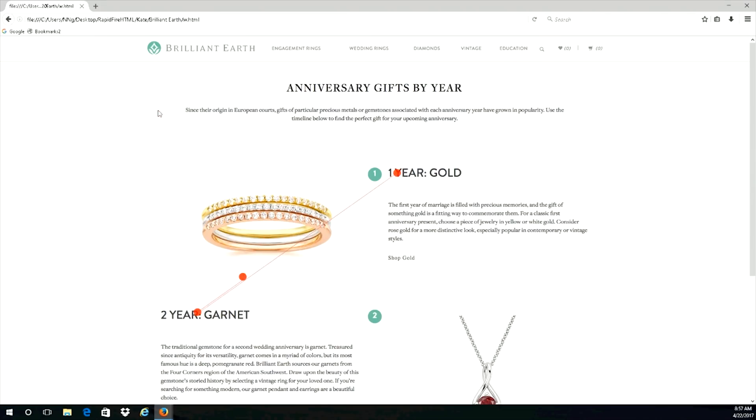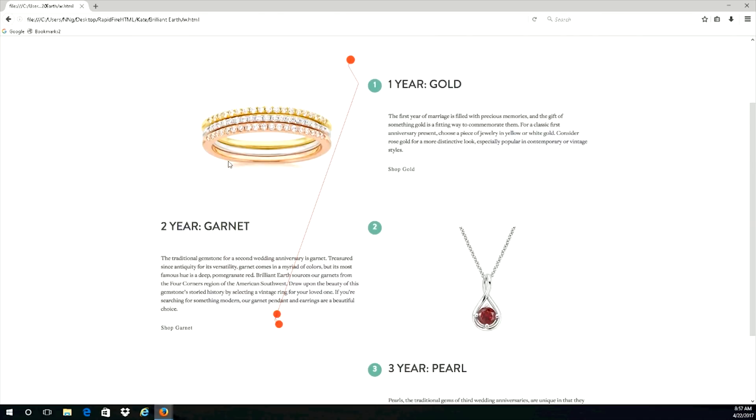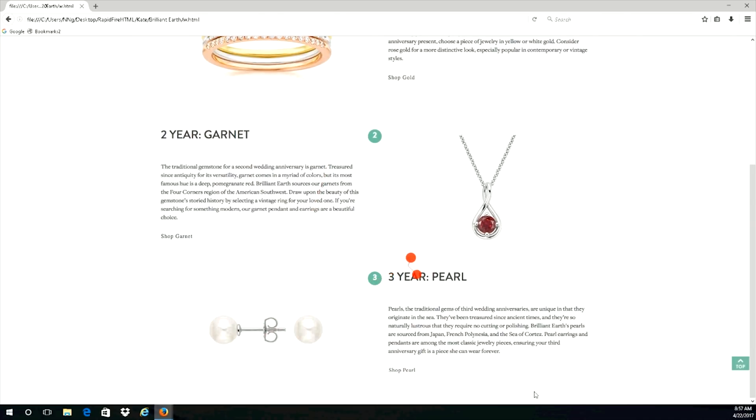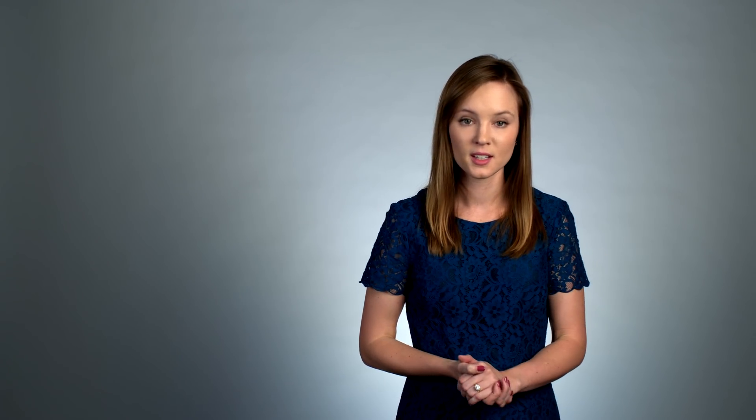I'll show you one of the gaze replays of one user doing this task on that Brilliant Earth weak version of the page. This is going to be slowed down to half speed so that we can see the path of the gaze. So we can see her taking in the page, looking at what's available. She's checking out the navigation options and then she scrolls down the page. She sees the pearl image and then she sees three-year pearl, that subheading. That's what she fixates on and that's what she identifies as her target. She never looks at or considers the shop pearl link. And we saw the same pattern over and over again on the weak version.